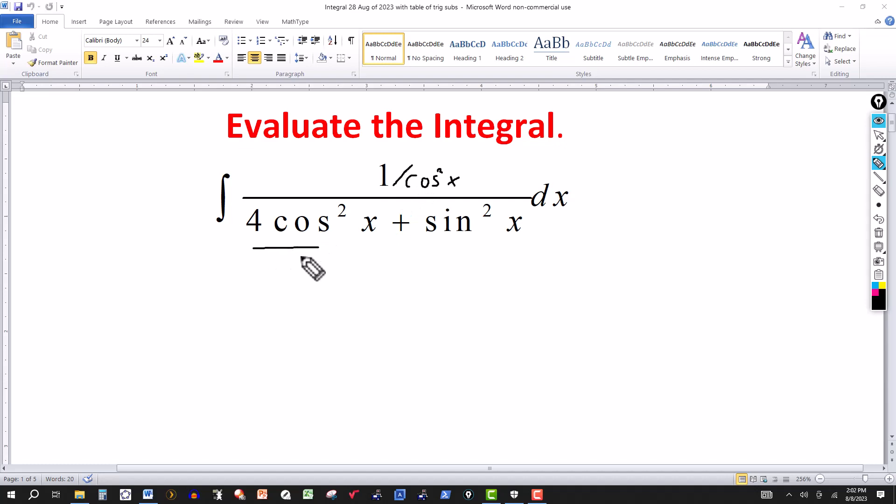So this will be, this term will be divided by cosine squared. This will be divided by cosine squared.